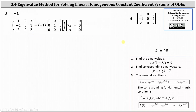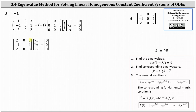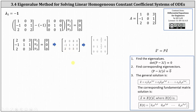Setting up the equation, we have matrix A minus negative one times the three by three identity matrix times vector V equals the zero vector. Simplifying, the three by three matrix has entries two, zero, three in the first row; negative one, one, one in the second row; and two, zero, three in the third row. Writing the augmented matrix and reducing to row echelon form, we find: row one indicates V one plus three halves V three equals zero, and row two indicates V two plus five halves V three equals zero. V three is a free variable.